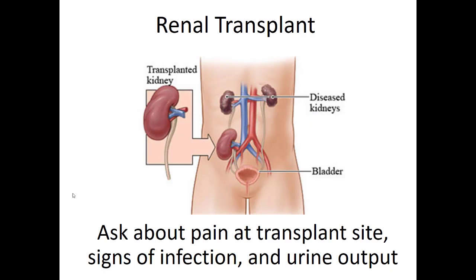Ultimately, the cure for renal failure is a renal transplant. When a patient gets a new kidney from a donor, it's placed in the right lower quadrant, attached close to the IVC and near the bladder for easier connections. In a renal transplant patient, you can sometimes palpate the transplanted kidney in the right lower quadrant. These patients are immunosuppressed so they don't reject the kidney, but that makes them more prone to infection — so ask about fever. A specific sign is pain over the transplant site, which could indicate infection or UTI affecting the new kidney.